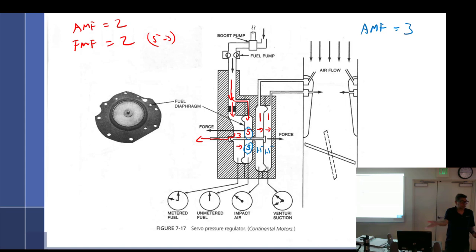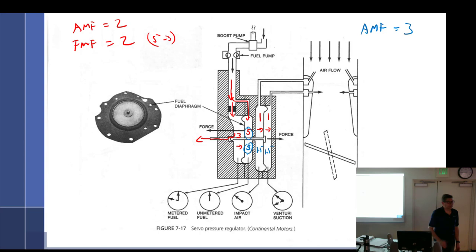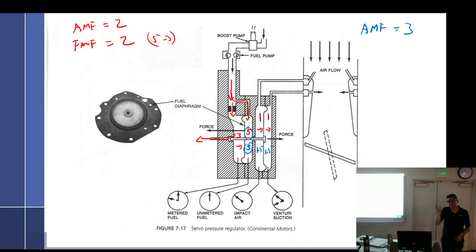Why does unmetered fuel pressure stay constant? The pump is spring-driven — the same spring pushes the diaphragm at idle or at high RPM. It's variable displacement: it puts out as much as needed until it can't keep up. For the most part, pump pressure is relatively constant.